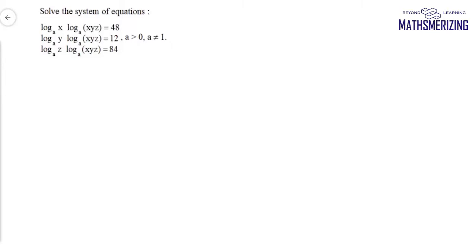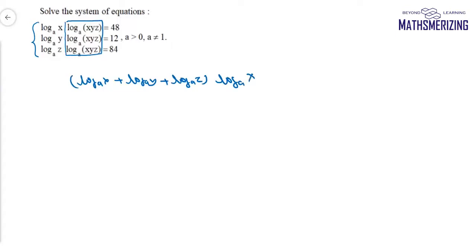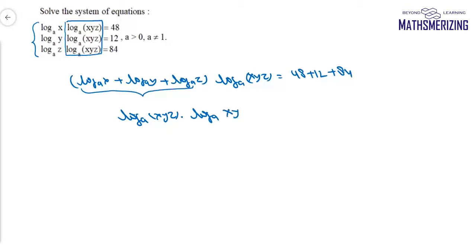If we look closely, there is symmetry in the question. If we add all three equations, we can take log_a(xyz) as a common factor, and we get log_a(x) plus log_a(y) plus log_a(z), which equals log_a(xyz). Adding all three equations gives log_a(xyz) times log_a(xyz), and the right-hand side gives 48 plus 12 plus 84.